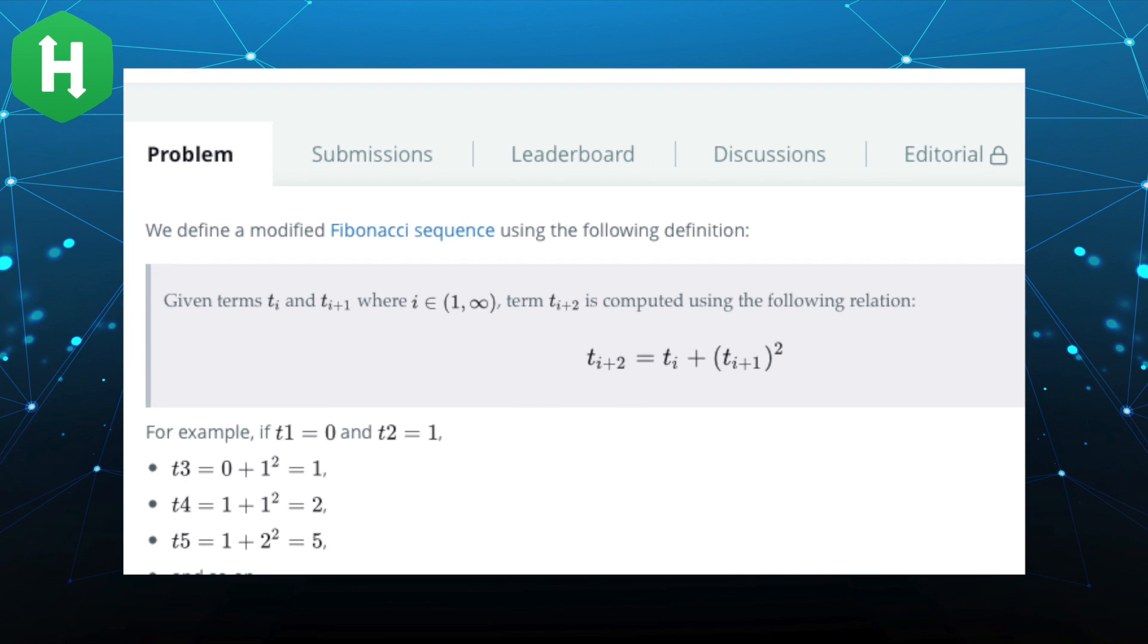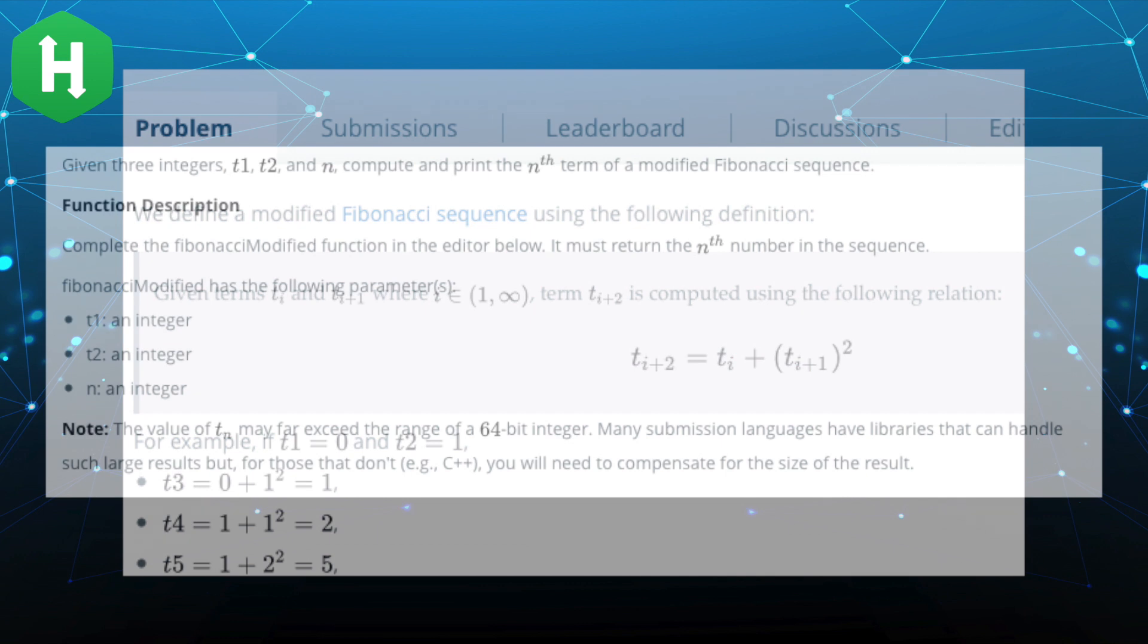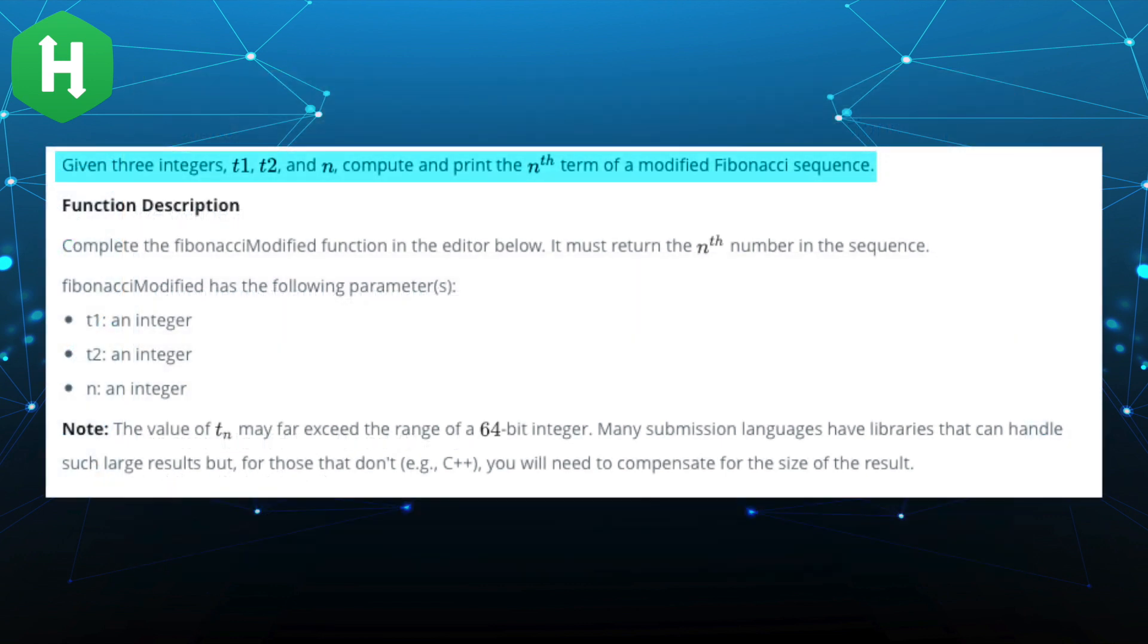The problem statement describes a modification to the Fibonacci method where one of the terms is squared. This may result in integers that far exceed the range of a 64-bit integer. In this modified version of the Fibonacci formula, each number in the sequence is the sum of the square of the two numbers that precede it. Your method must receive three integers. The first two integers correspond to the first two numbers in the modified Fibonacci sequence, and the last integer is the nth term in the sequence which your algorithm will need to compute.